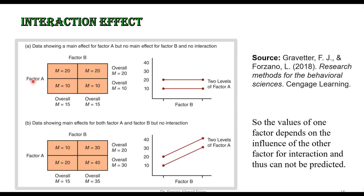Looking at main effects: for Factor A in the first example, the row means are 20 and 10, which are different, so there is a main effect for Factor A. But there is no difference across Factor B levels, so no main effect for Factor B. In the second example, the means for Factor A are 20 and 30 — different, so there is a main effect. For Factor B the means are 15 and 35 — also different, so there is a main effect. Both Factor A and Factor B have main effects, but there is no interaction effect.